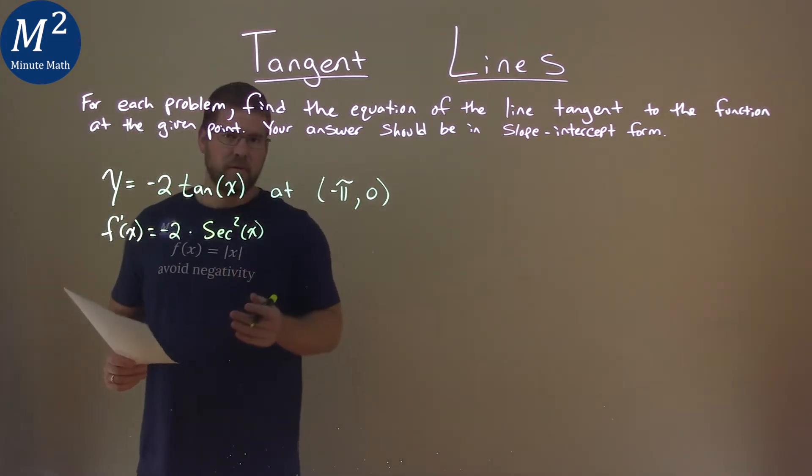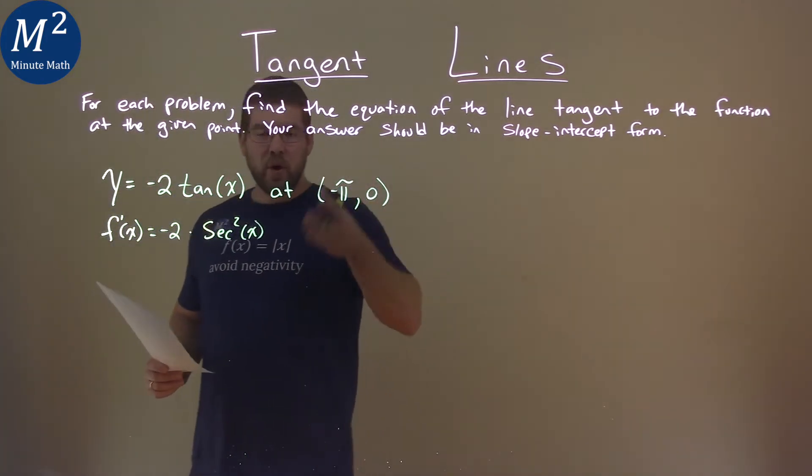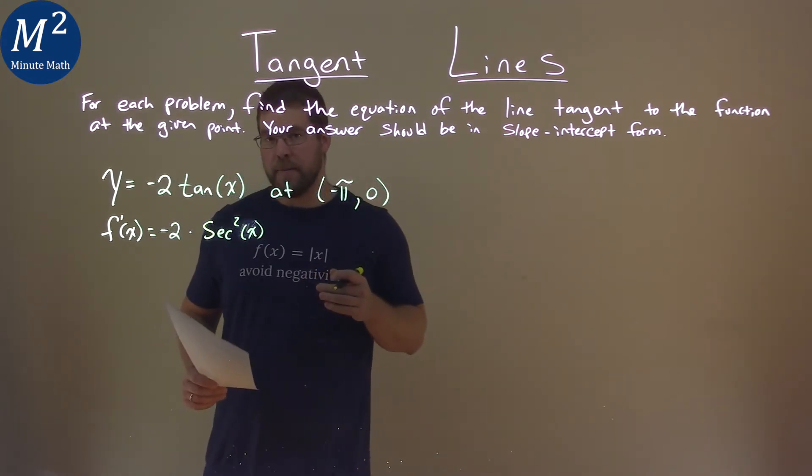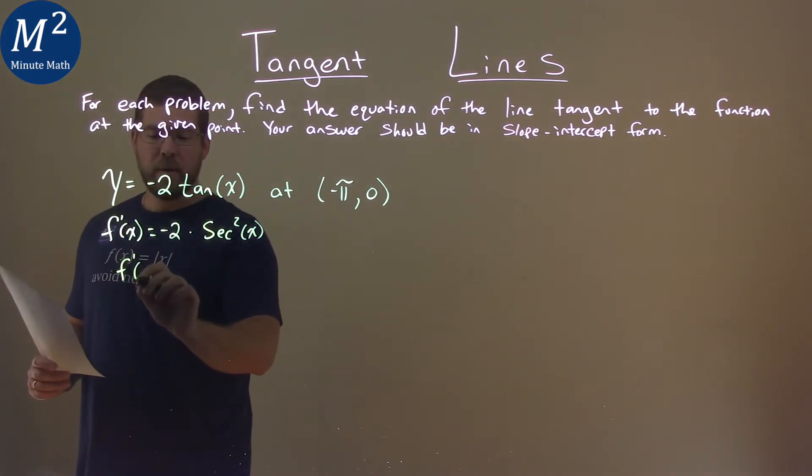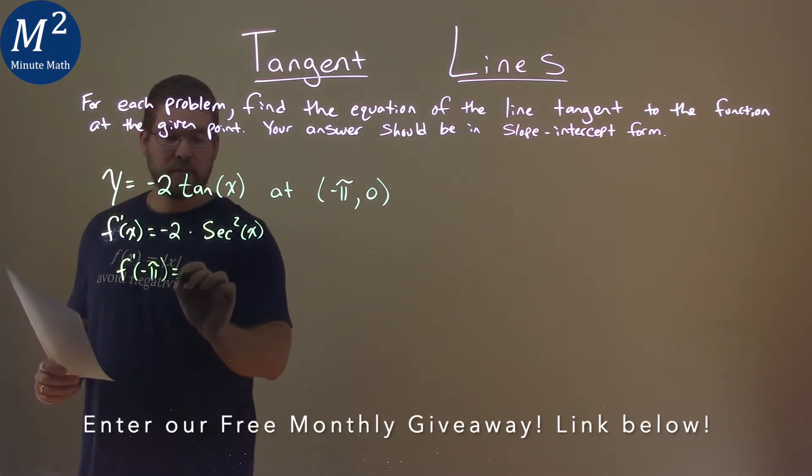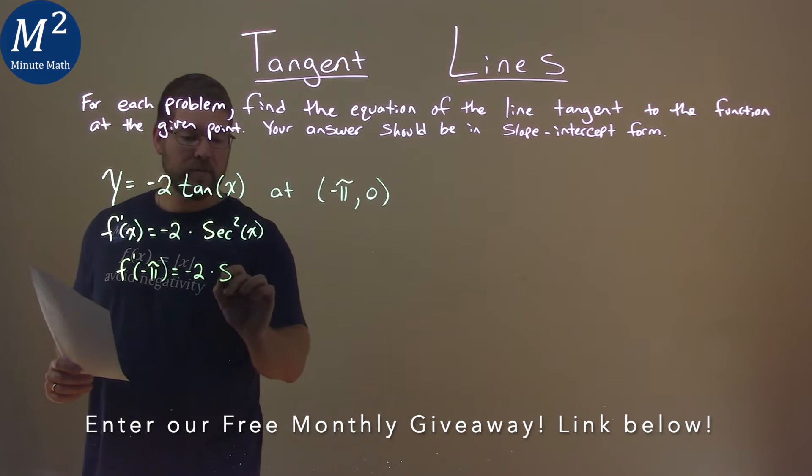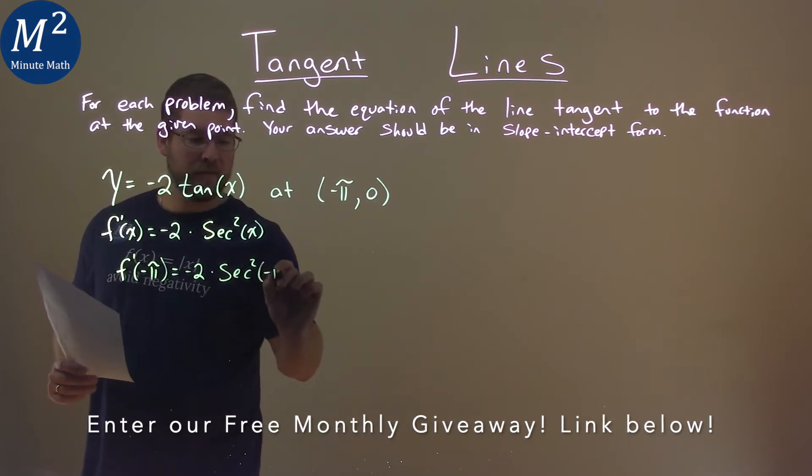We have our derivative, and we want to find the slope of the tangent line at our x value negative pi. So to do that, we take our derivative f prime, and we're going to put negative pi in for x here.